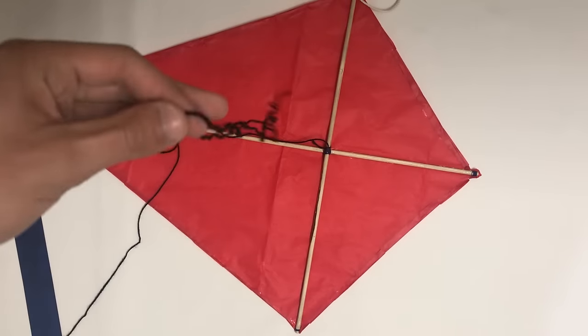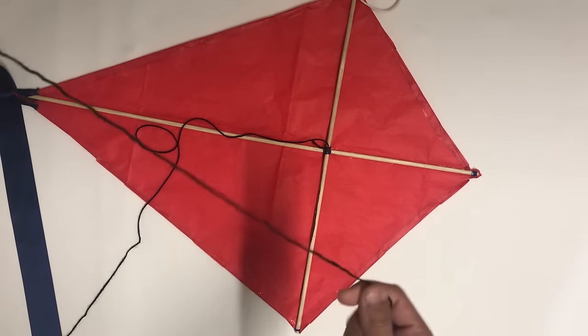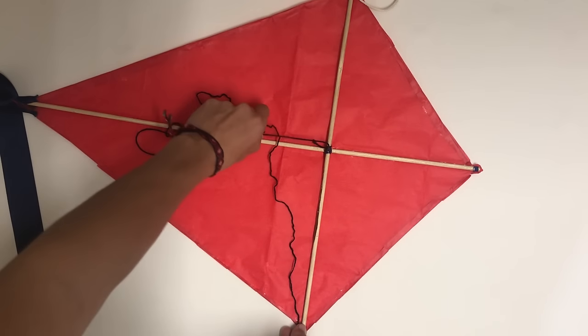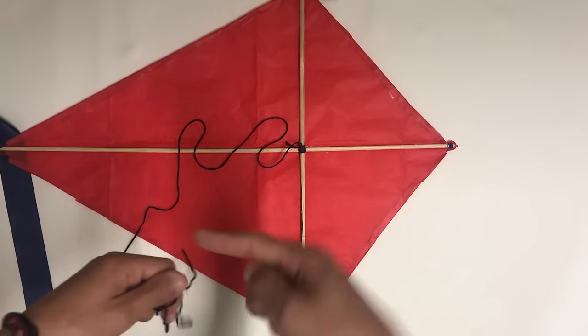To give the kite a better grip, add a piece from the same string to the corner of the stick and to the string in the middle. Do the same on the other side.